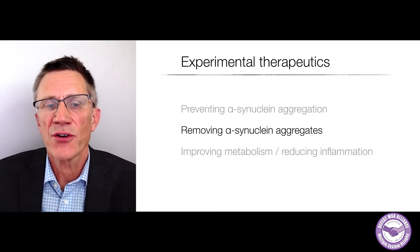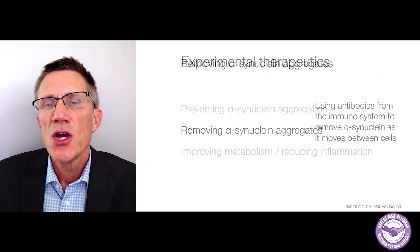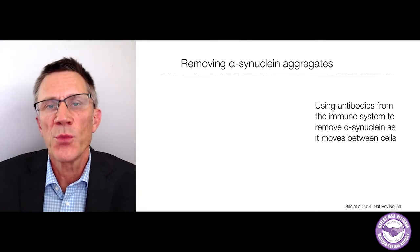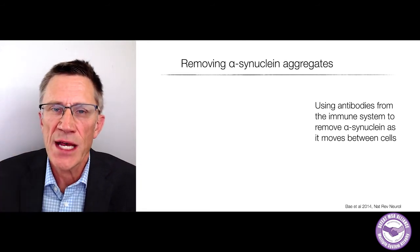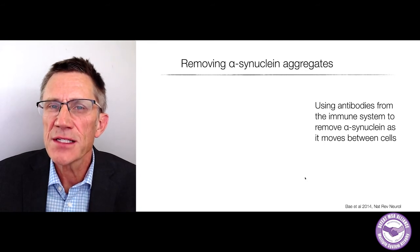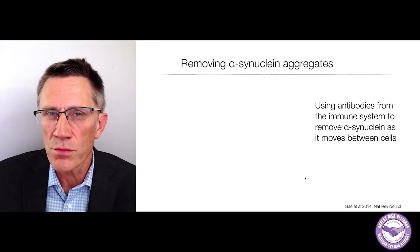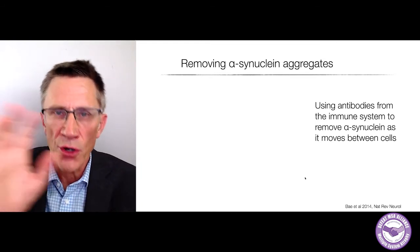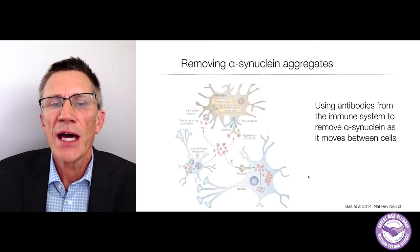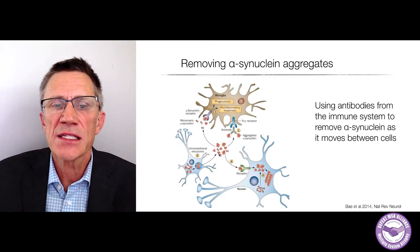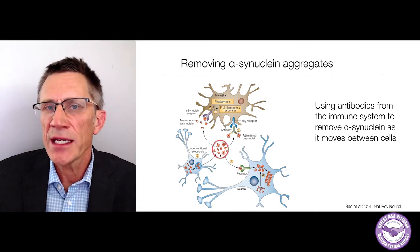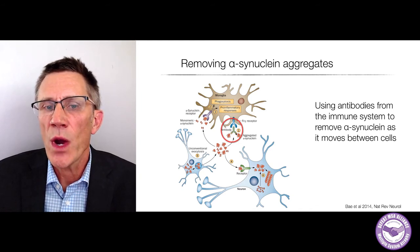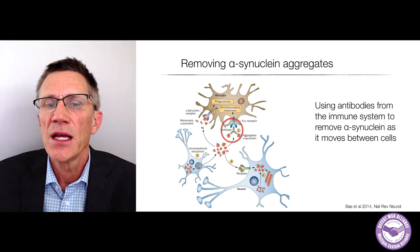How about removing aggregates that are already there? Using antibodies from the immune system, it's possible to remove alpha-synuclein as it moves between cells. Alpha-synuclein doesn't seem to stay just in the cell where it's formed — aggregates seem to jump from one cell to another, be it a neuron or oligodendrocyte.